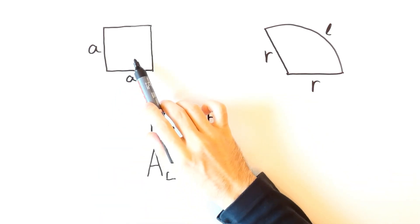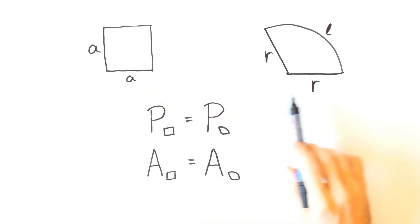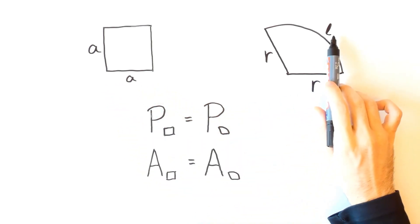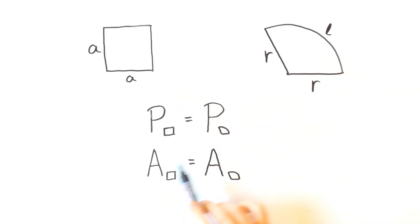So we start with a given square, that means that each side A is known. And we want to find R and L so that the sector and the square have equal perimeters and equal areas.